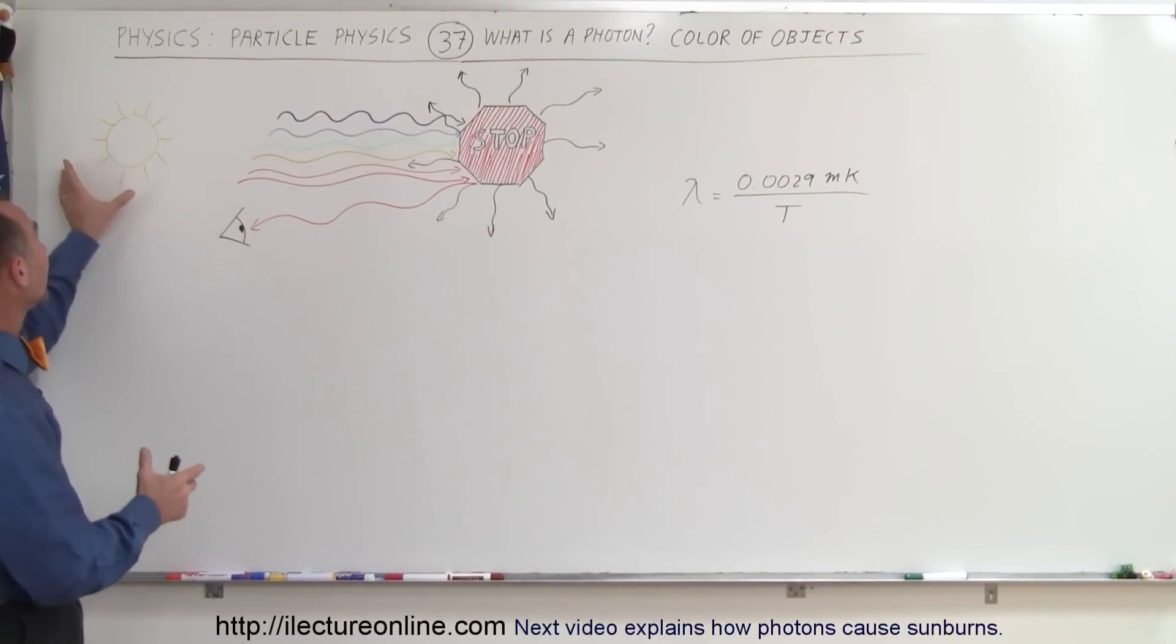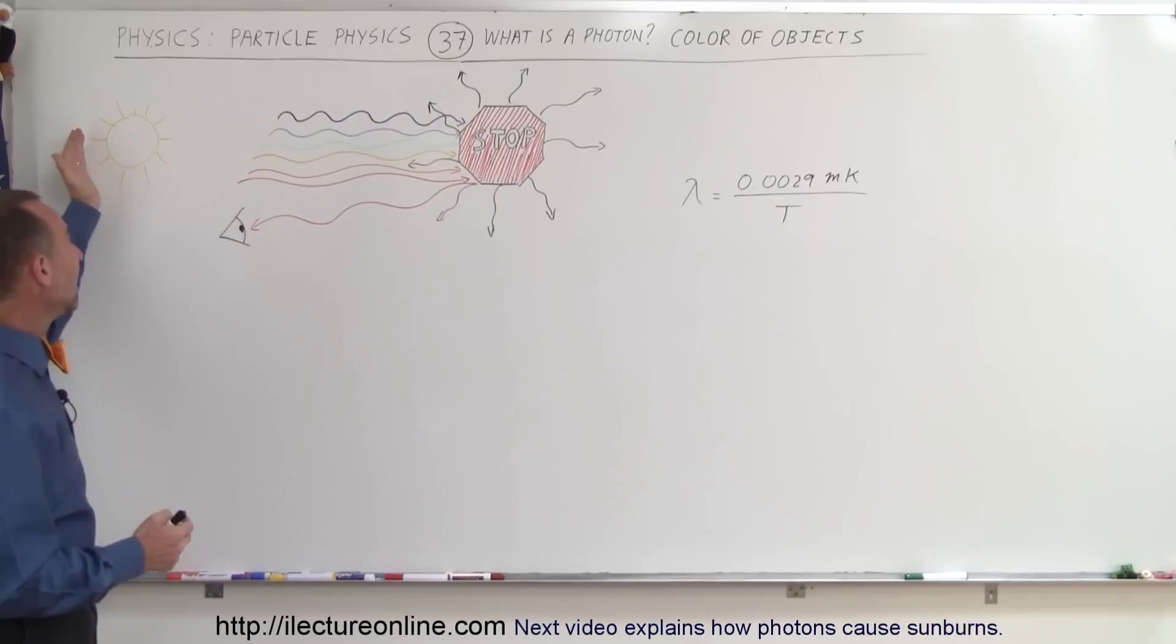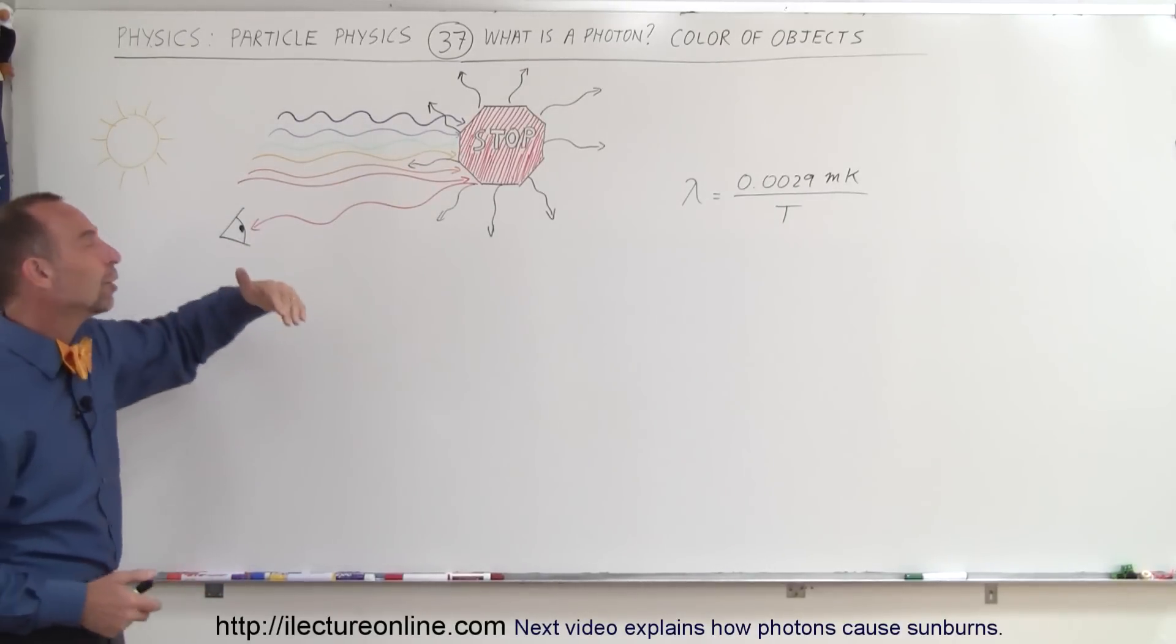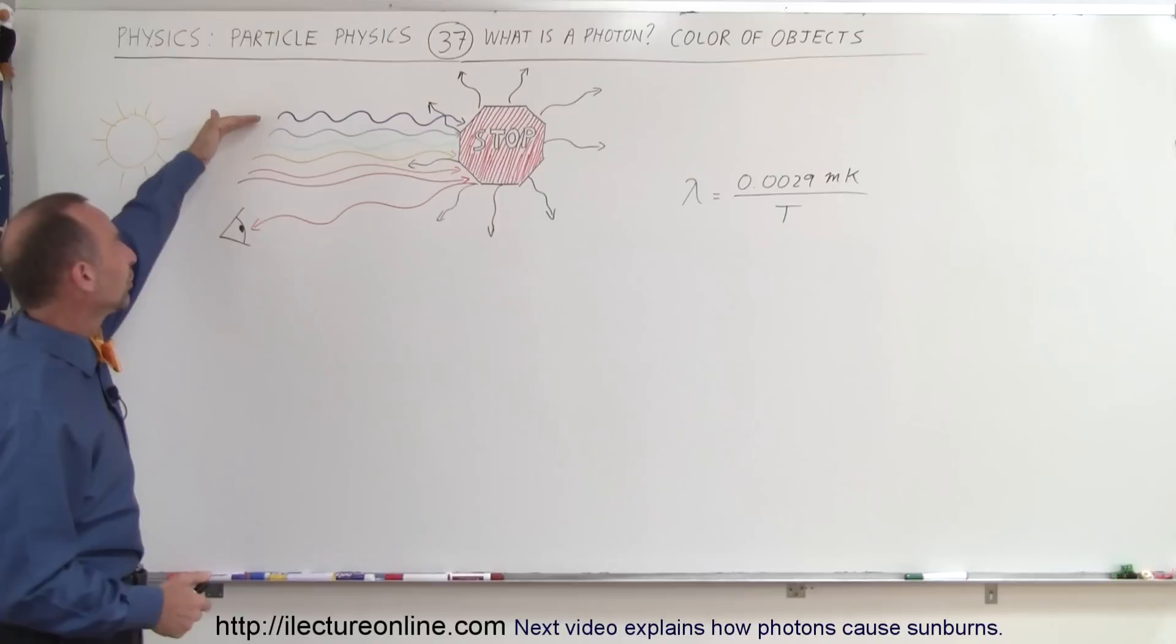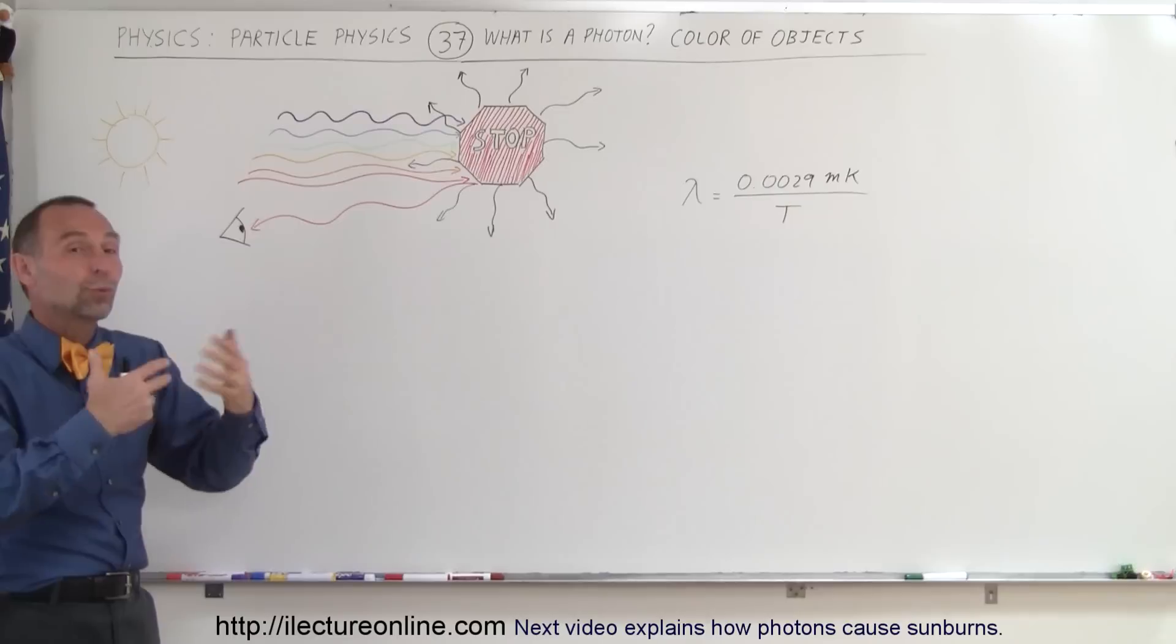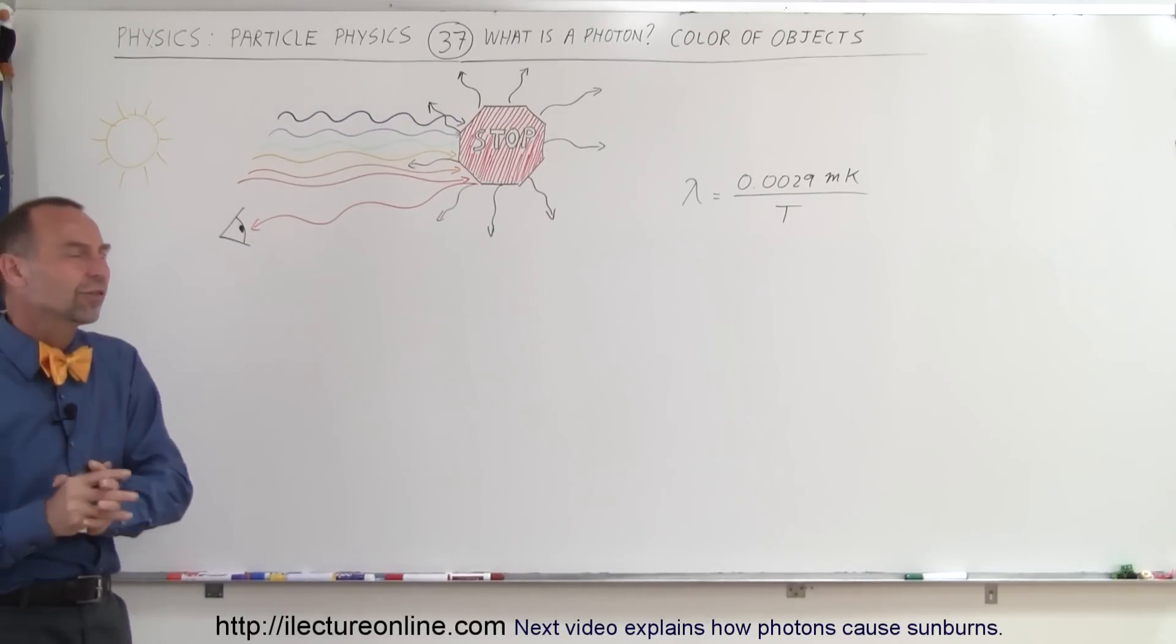So let's say we have the Sun over here that looks yellow to us for various reasons. The sunlight that finally reaches the Earth will contain all the various colors of the rainbow from purple to blue to green, yellow, orange, and red. So why does a stop sign for example look red, and why does the ocean seem to look blue, and why does the sky look blue?